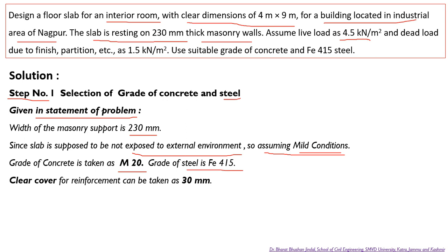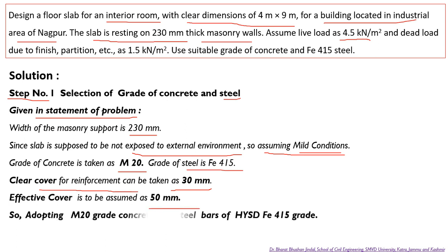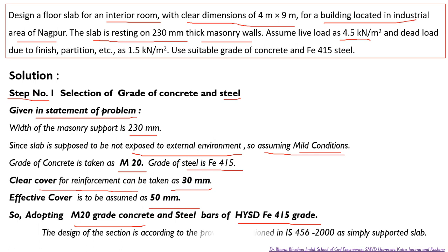Based on the exposure conditions we take a clear cover for reinforcement as 30 mm. The effective cover we assume as 50 mm. We adopt M20 grade of concrete and HYSD FE 450 grade steel bars. The design of the section will be according to provisions in IS 456 as a simply supported type of slab.